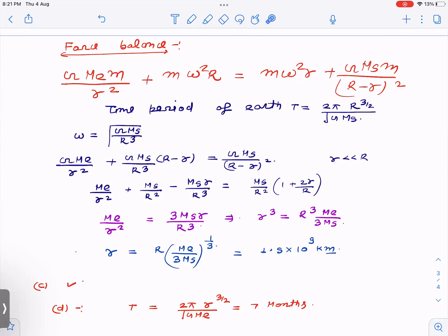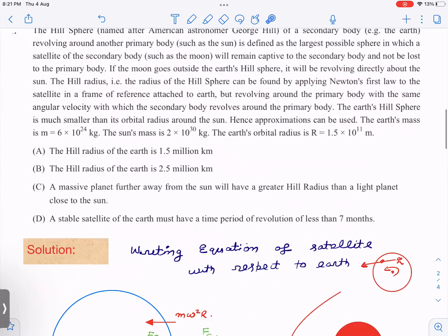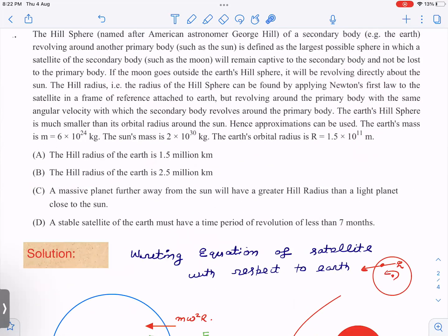Now let us see options C and D. Option B is of course wrong if A is correct. Option C: a massive planet further away from the sun will have greater Hill radius than a lighter planet close to the sun. That is what we have got: r = R ∛(Me / 3Ms). So if heavier planet, greater Hill radius. Massive planet, more mass, away from the sun. Both factors are supporting. So option C is also correct.